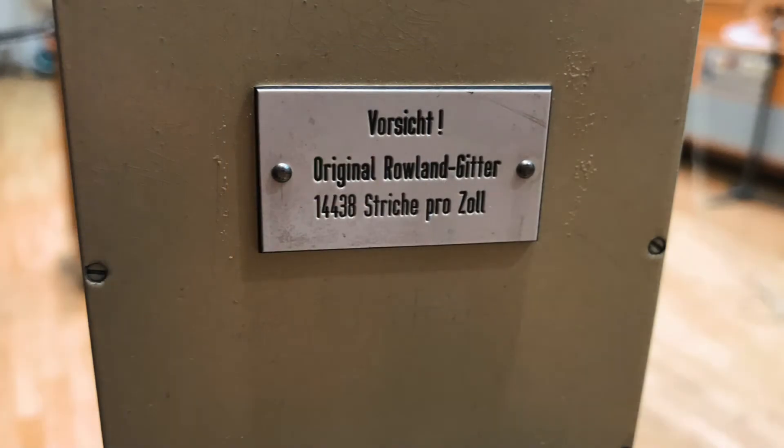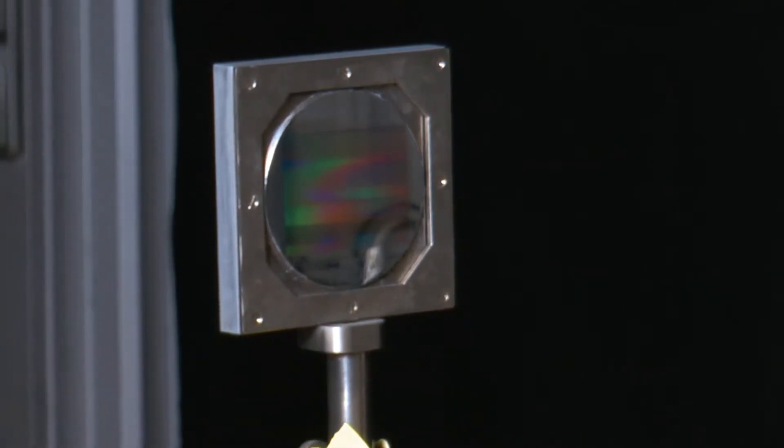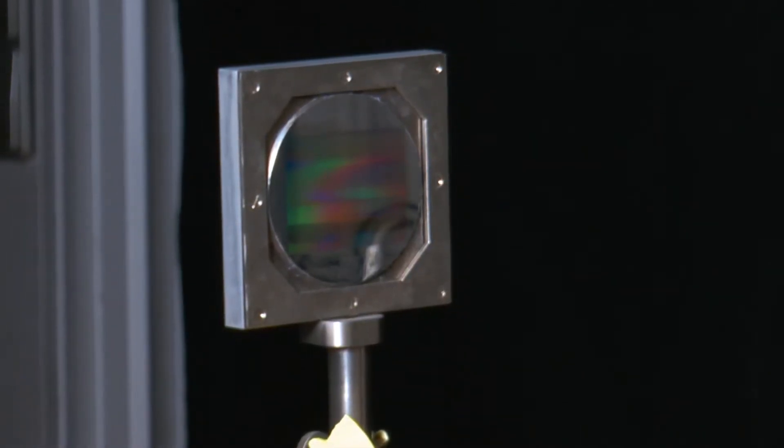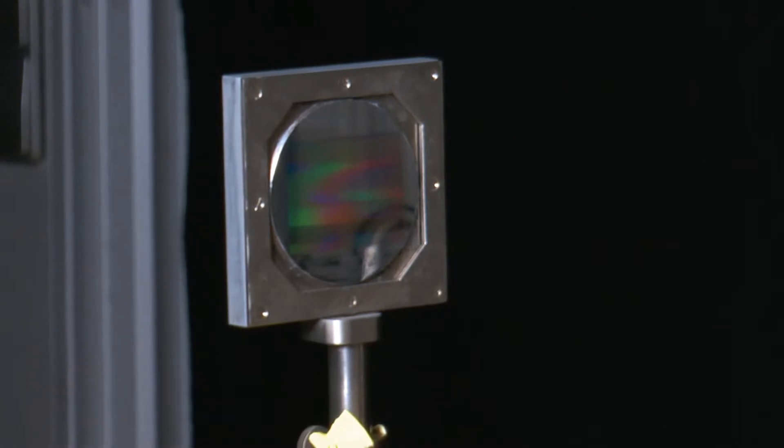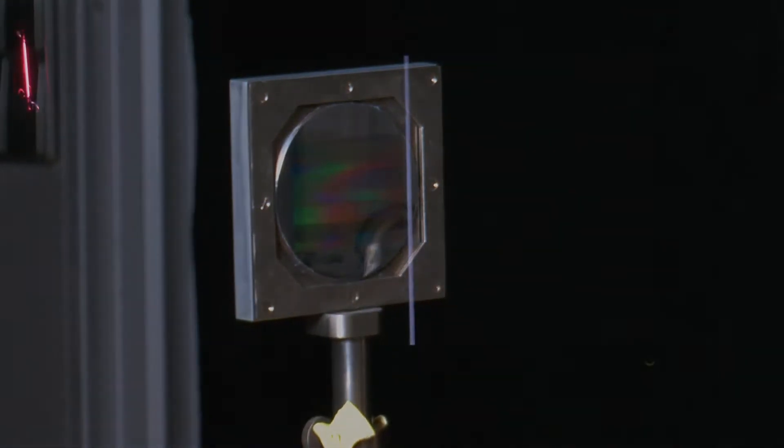If the spherical cap has a radius r, the illumination gap must be fixed on the Rowland circle around the Rowland grating which in turn has a radius of r/2. Due to the spherical shape of the Rowland grating, a sharp image of the spectrum can be seen directly on the grating. This is recorded by the camera.